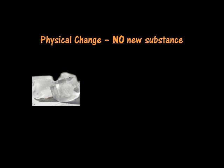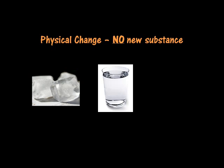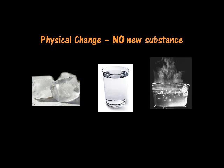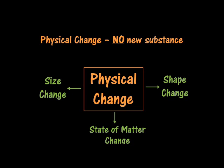A change to state of matter is another example of a physical change. If I take an ice cube and set it on the counter, it will melt and become liquid. But I still have H2O — it's still water. If I take the same water and boil it, it will change from a liquid to a gas. But it's still H2O, it's still water. I have not made anything new. A change of state is another example of a physical change, because nothing new is formed.